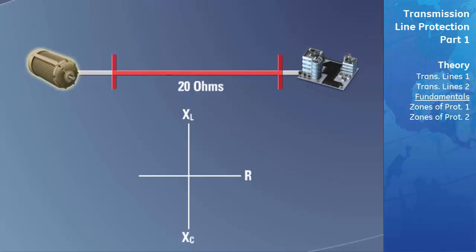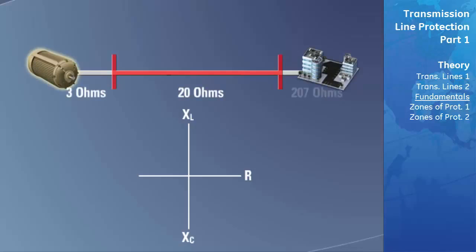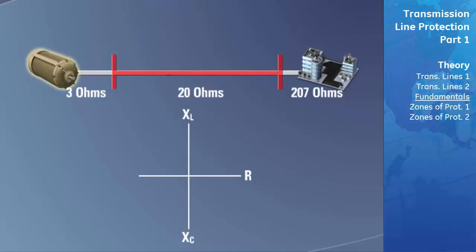The impedance of a transmission line is inherently mostly inductive. Therefore, if you were to plot the impedance of the line on this graph, it would be very close to the y-axis. If you were to draw a line from this point to the origin of the graph, you would have a representation of your entire transmission line. For example, plotting a point midway between the origin and the end of the line would give an impedance of 10 ohms, which is also the impedance of the midpoint of the transmission line. In a normal power system, the load at the end is mostly resistive and larger than all other impedances.